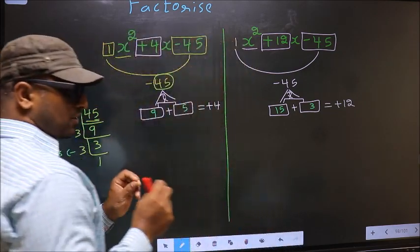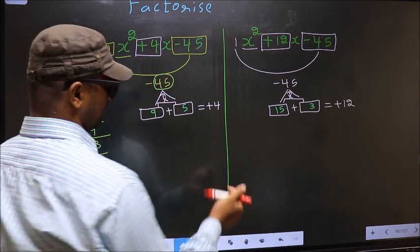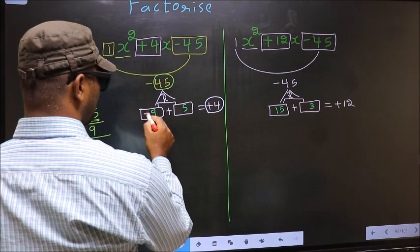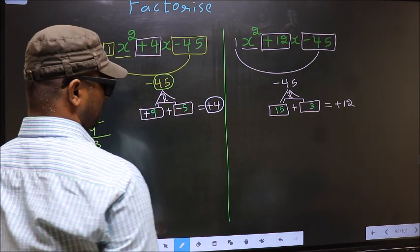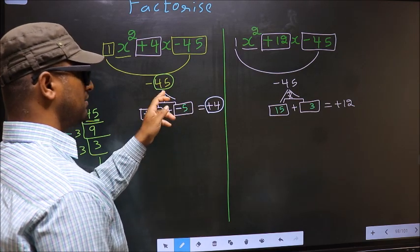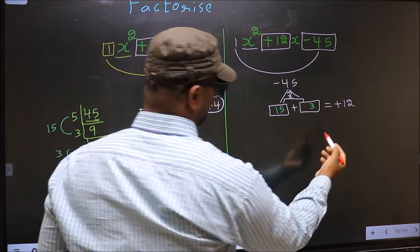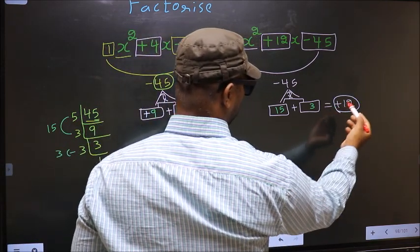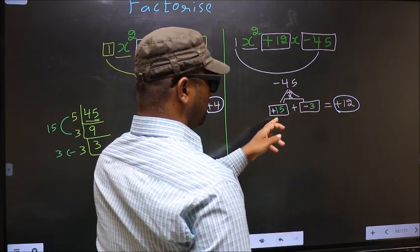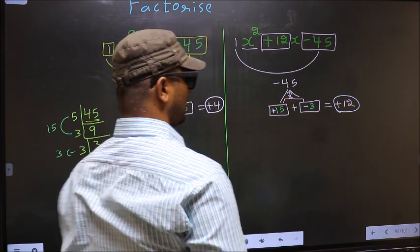Now we should adjust the signs. For the first expression we have plus 4, so we put plus 9 and minus 5: plus 9 minus 5 is plus 4, and plus 9 into minus 5 is minus 45. For the second expression we have plus 12, so we put plus 15 and minus 3: plus 15 minus 3 is plus 12, and plus 15 into minus 3 is minus 45.